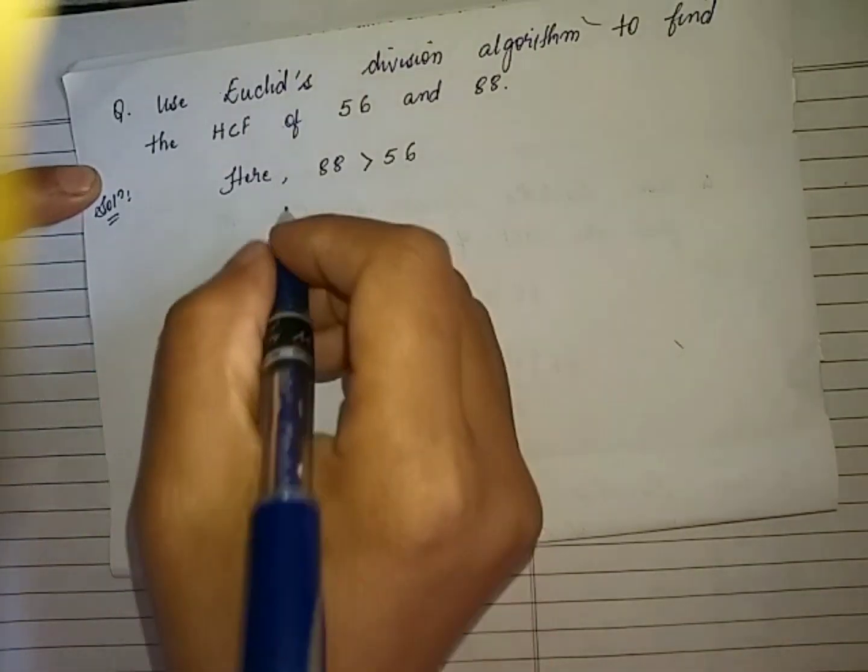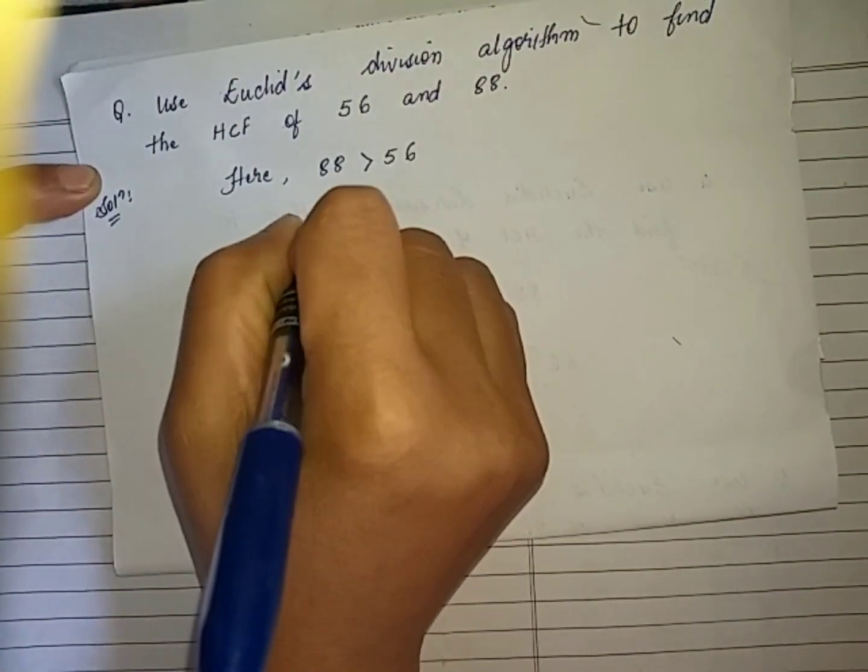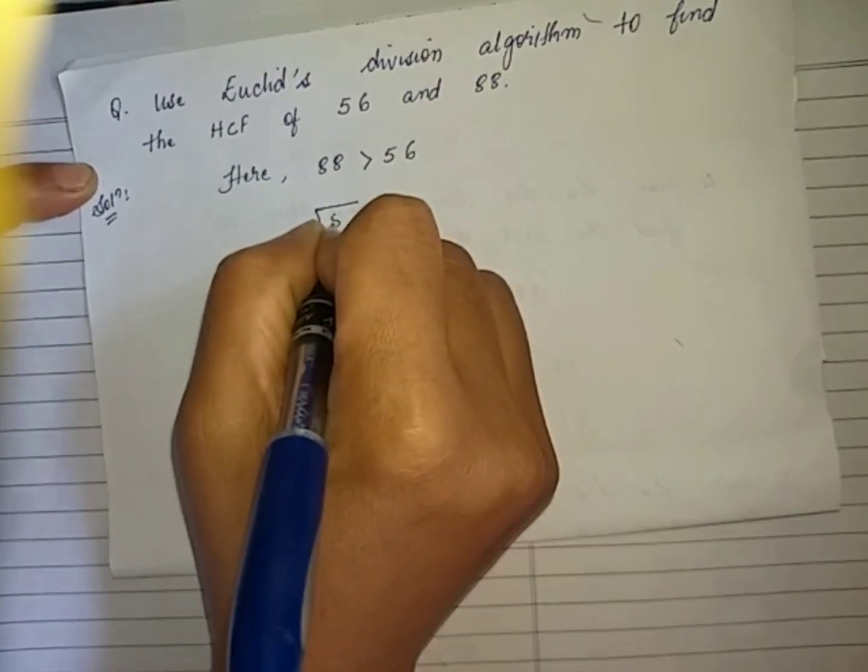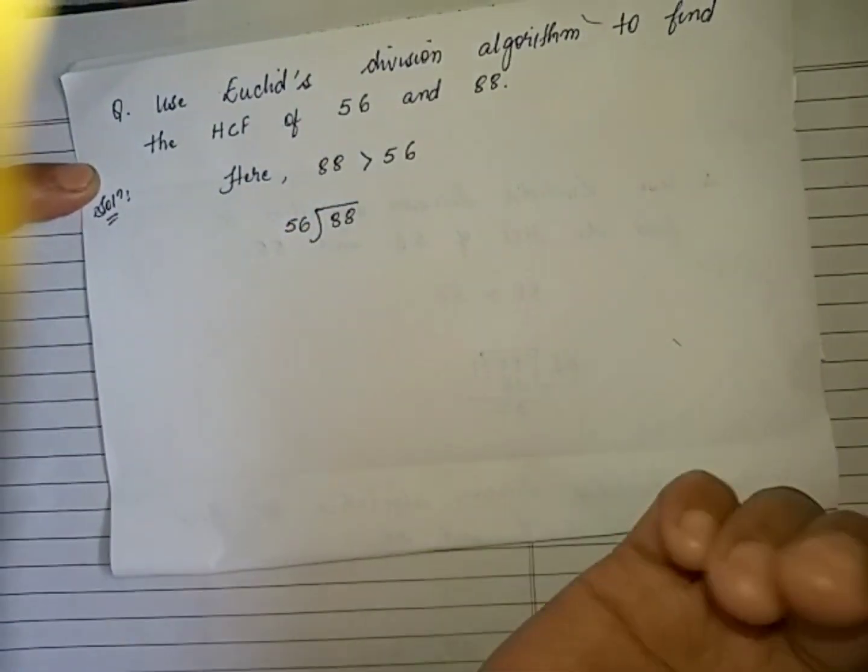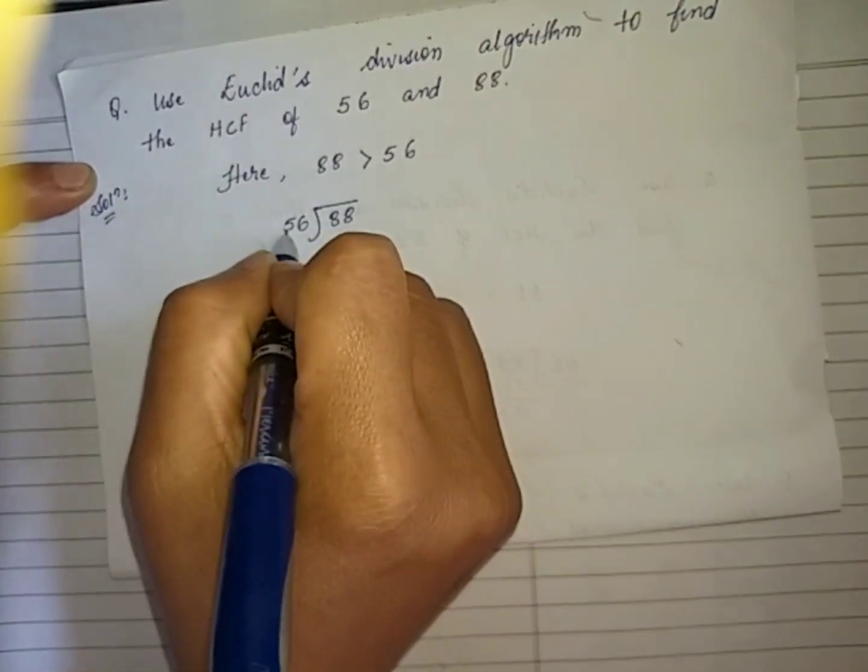What we do is we divide the greater number by the smaller number. That is, we divide 88 by 56.